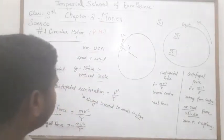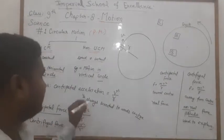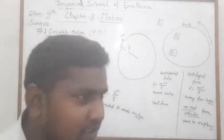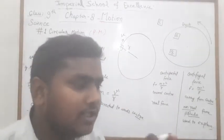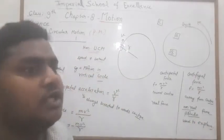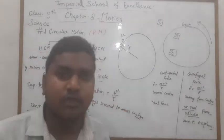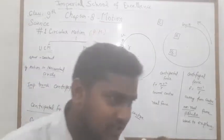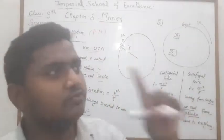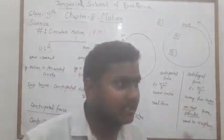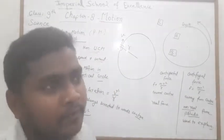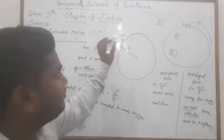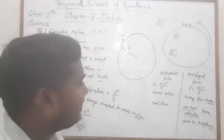Here a very important term is centripetal acceleration. It is an acceleration which is always directed toward the center, acting on a body performing circular motion. This acceleration is always directed toward the center, and its value is v² upon r, where v is the speed of the particle and r is the radius of the circle.